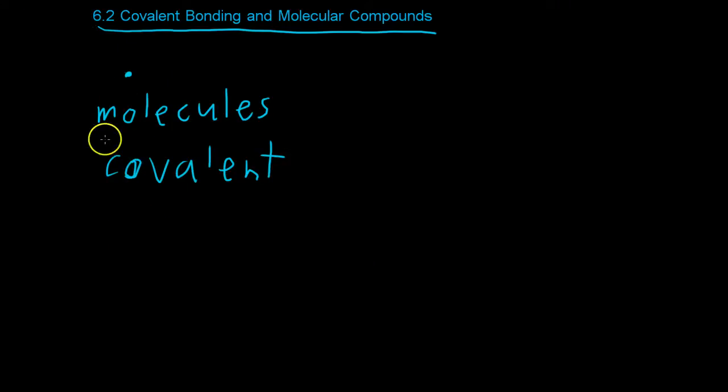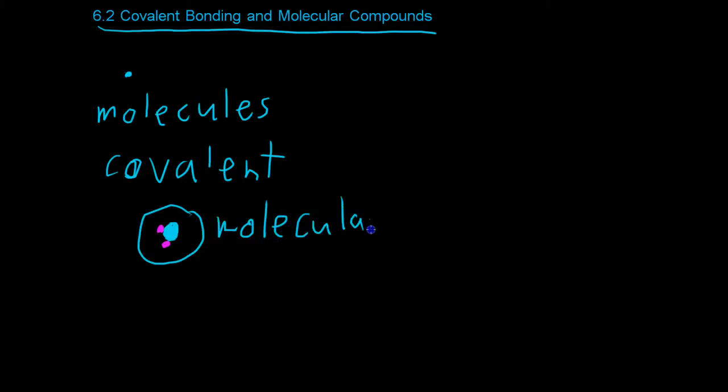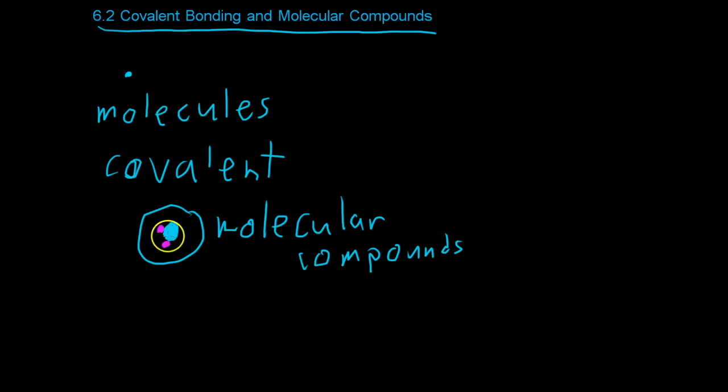Basically what happens is that you'll have a few atoms, and they're sort of sharing electrons in a covalent bond as we mentioned before, and when these atoms bond together, they form what are called molecular compounds. These compounds also have what is known as a molecular formula, which gives the number of atoms and what type of atom are in each type of molecule.